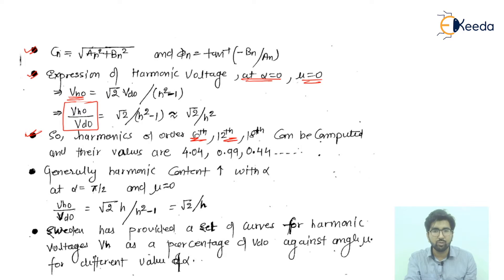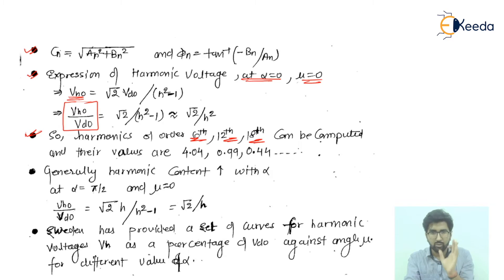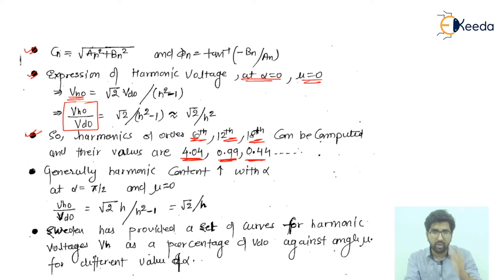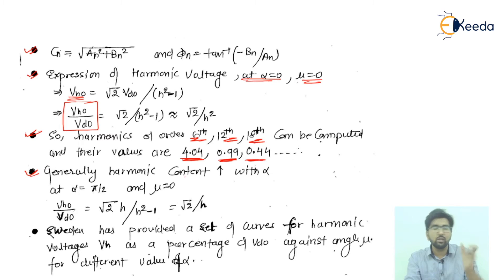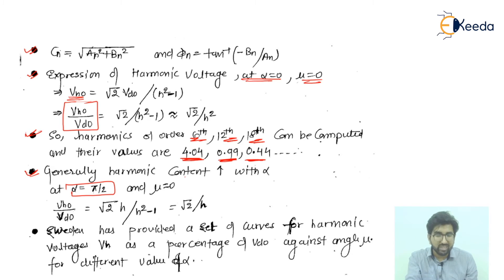The harmonics of order 6th, 12th, and 18th can be computed this way. The 6th harmonic has a value of 4.04%, the 12th has 0.99%, and the 18th has 0.44% — as harmonic order increases, the magnitude decreases. Generally, harmonic content increases with alpha. When α = π/2, the expression V_hO / V_d0 becomes approximately √2 · h / (h² − 1), which simplifies to approximately √2 / h.